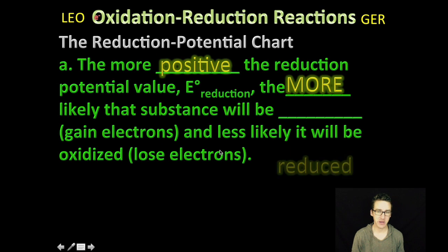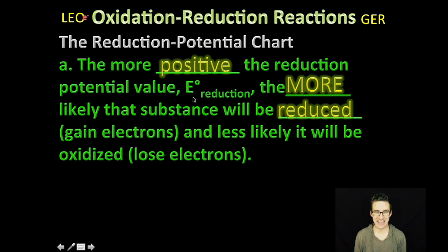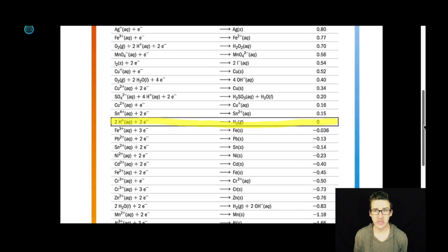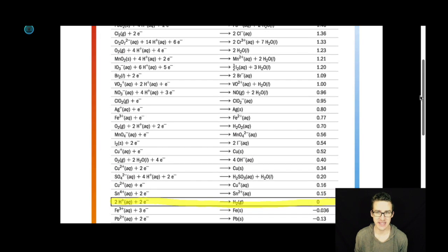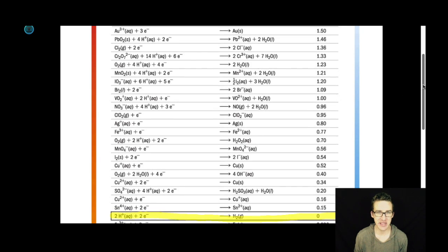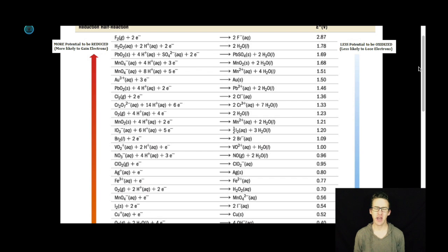The more positive the reduction potential - and we're going to use this E sub reduction symbol - the more likely that substance will be reduced or gain electrons, and less likely it will be oxidized or lose electrons. As you study your reduction potential chart, notice that all these things above hydrogen are more likely to be reduced. The reduction potential gets larger. Things like fluorine and hydrogen peroxide are going to be really likely to gain electrons. They're really likely to be reduced. They have really high reduction potentials.